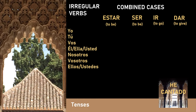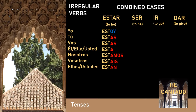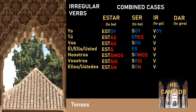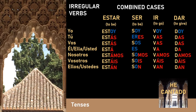Finally we have the verbs ser, estar, ir, and dar, which are conjugated very similarly. Estar: yo estoy, tú estás, vos estás, él/ella/usted está, nosotros estamos, vosotros estáis, ellos/ustedes están. Ser: yo soy, tú eres, vos sos, él/ella/usted es, nosotros somos, vosotros sois, ellos/ustedes son. Ir: yo voy, tú vas, vos vas, él/ella/usted va, nosotros vamos, vosotros vais, ellos/ustedes van. Dar: yo doy, tú das, vos das, él/ella/usted da, nosotros damos, vosotros dais, ellos/ustedes dan.